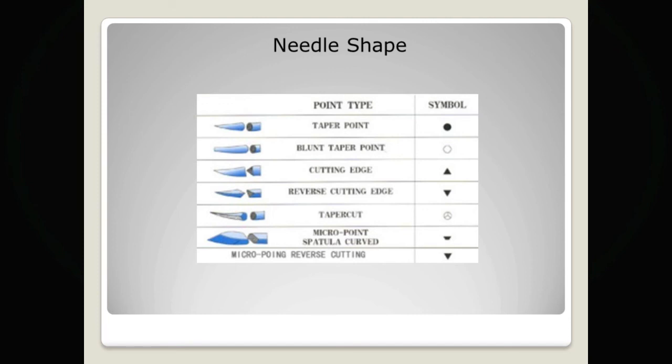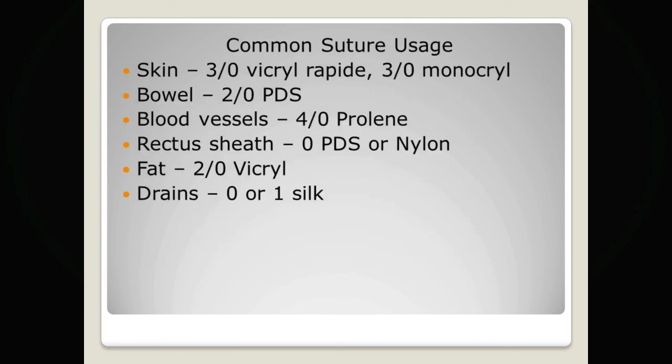Before we finish, we'll discuss some of the commonly used sutures you'll see in theatre. When closing skin with a subcuticular suture, you'll commonly see a 3-0 Vicryl Rapide or a 3-0 Monocryl. The difference is that Vicryl Rapide is a braided suture and Monocryl is a monofilament suture, but both are absorbable.